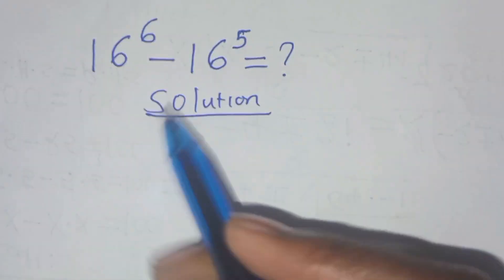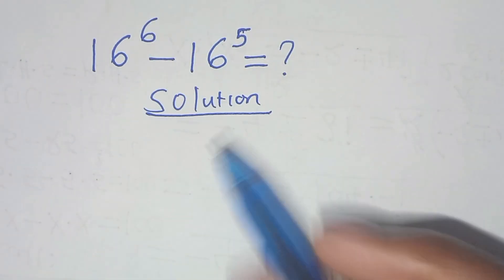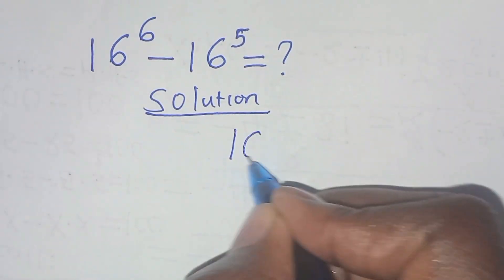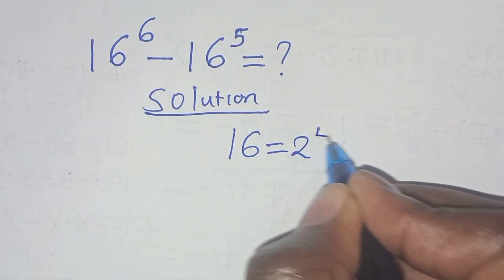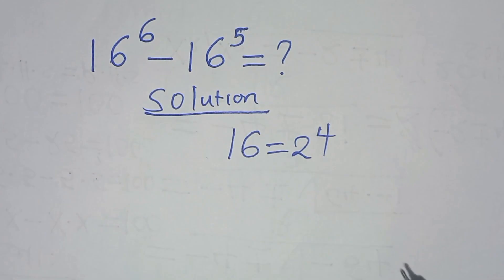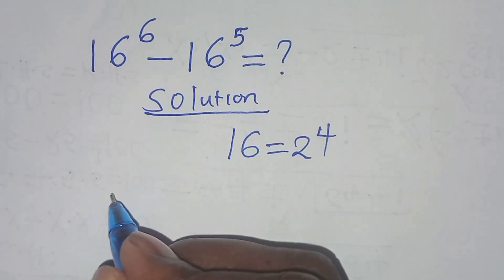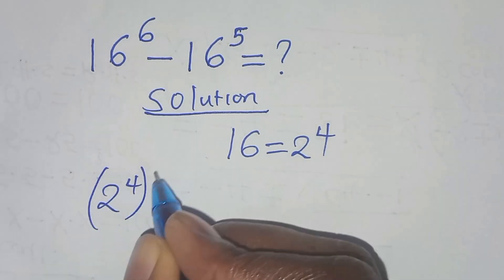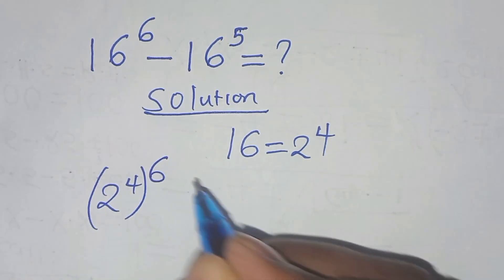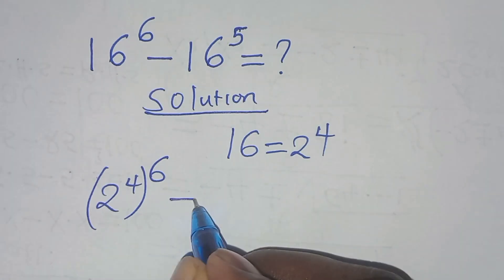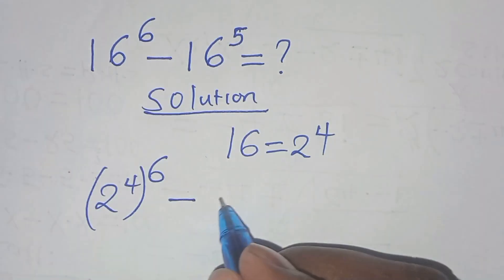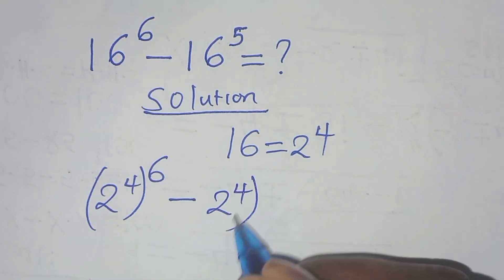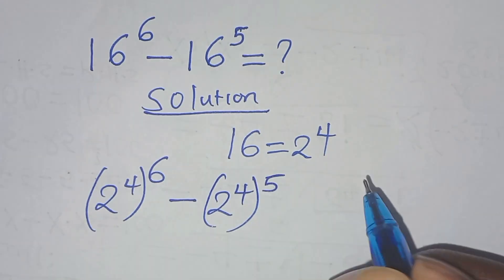We can express 16 to the power 6 as follows. Remember, 16 can be expressed as 2 to the power 4. So here we have 2 to the power 4, raised to power 6, minus 16 — which is again 2 to the power 4 — raised to power 5.